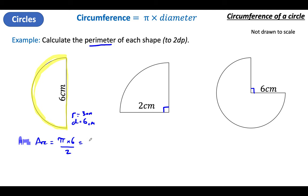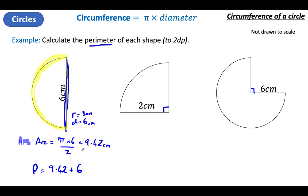I'm going to do 9.42 centimeters for the arc. But the perimeter is a mixture of the arc plus the flat bit — I need to add in that edge as well or I haven't got the whole perimeter. So I need to add six onto that, making it 15.42 centimeters. We're after a proportion of the circle — in this case, half the circle.